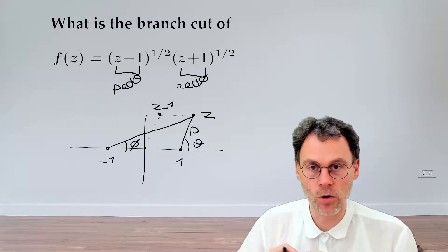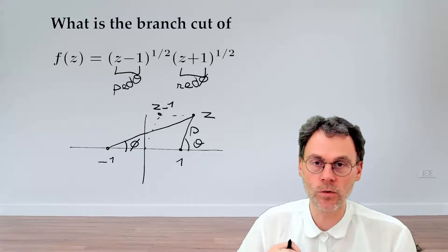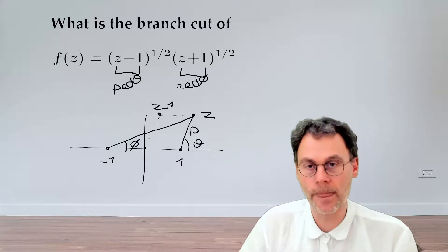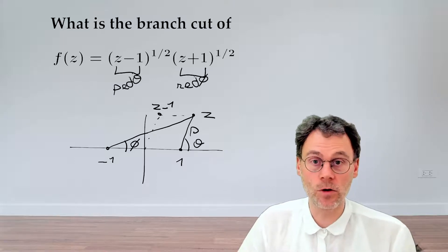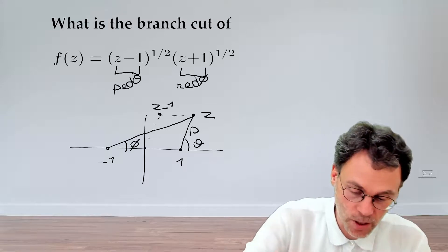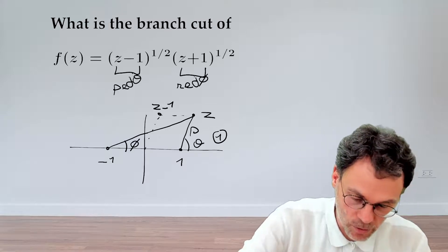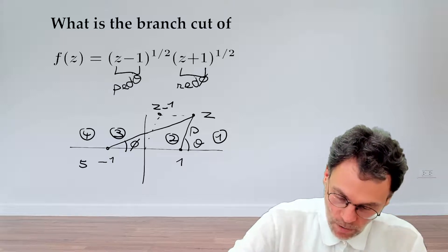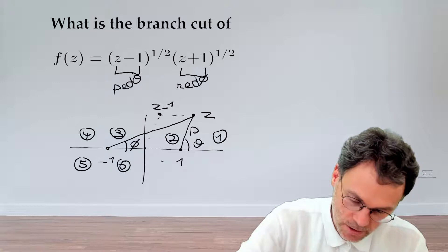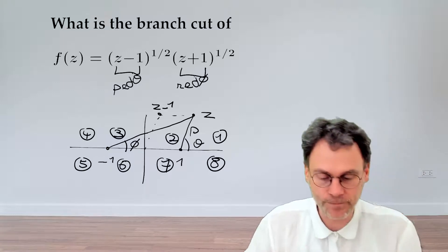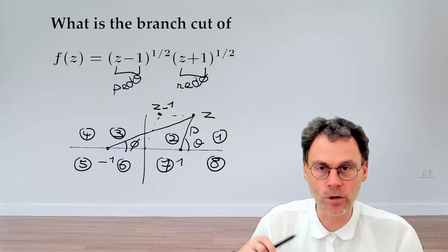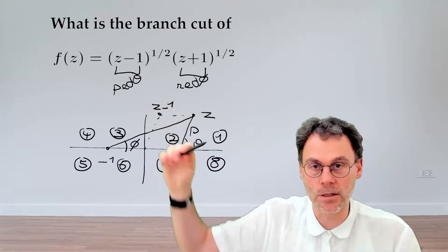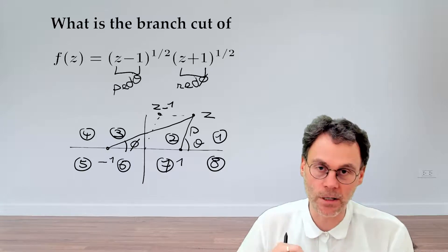So now what we need to do is we need to figure out how these angles evolve if we move around in the complex plane. And for that, we're going to look at a number of strategically located points, which I'm going to number here. So we have 1, 2, 3, 4, 5, 6, 7, and 8. And obviously these points are located either just above the real axis or just below the real axis. So we should look at them in a sort of like limiting situation.